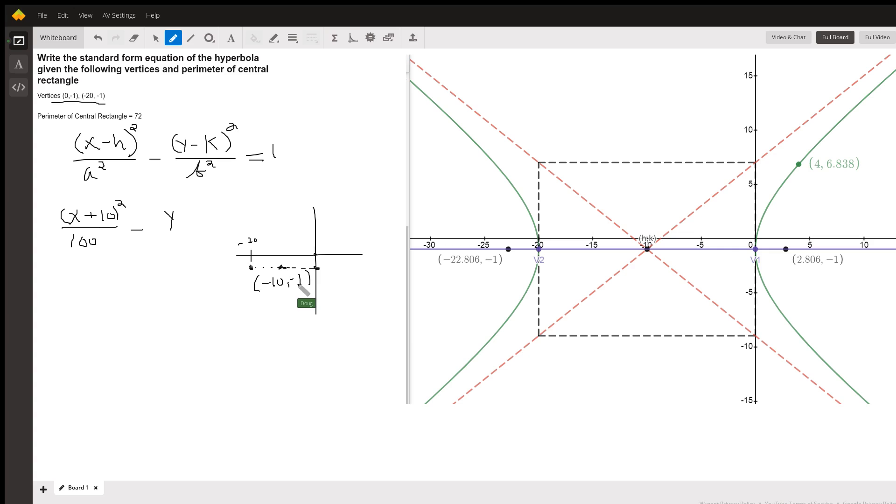k is negative 1, so y minus negative 1 is y plus 1, the quantity squared. The question is how do we find b with this other information given.